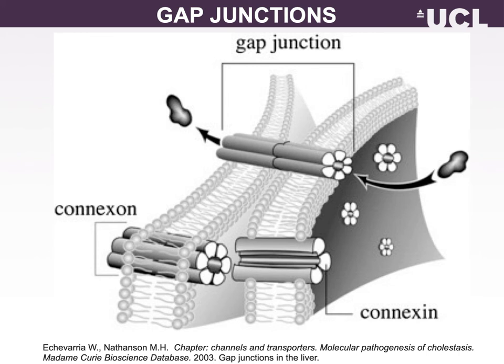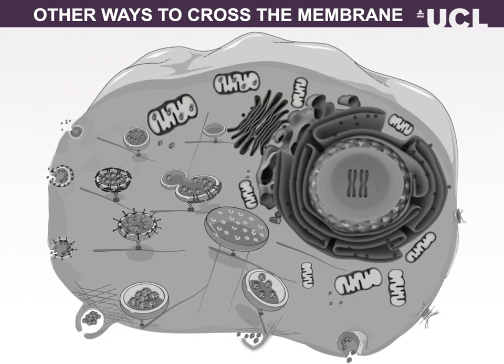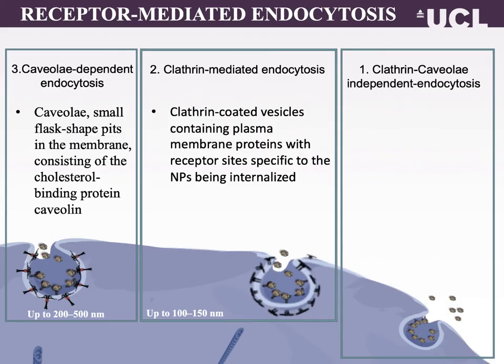Gap junctions allow adjacent cells to be in constant electrical and chemical communication with one another. Of particular importance is the rapid transmission of small second messengers such as inositol triphosphate and calcium ions. There are several other ways that solutes, including large macromolecules, can cross the membrane. These methods include receptor-mediated endocytosis, phagocytosis, pinocytosis, exocytosis, and membrane blebbing.